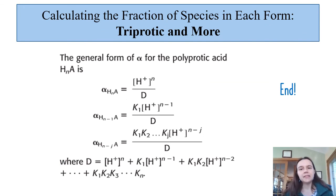Calculating the fraction of the species in each form for triprotic acids and more fully protonated acids can be pretty gnarly in terms of the math. What I want you to realize is that it follows the formula where the numerator is going to be [H+]^n for the acid. You're going to have K1 times [H+]^(n-1) for the first of our deprotonated intermediates.